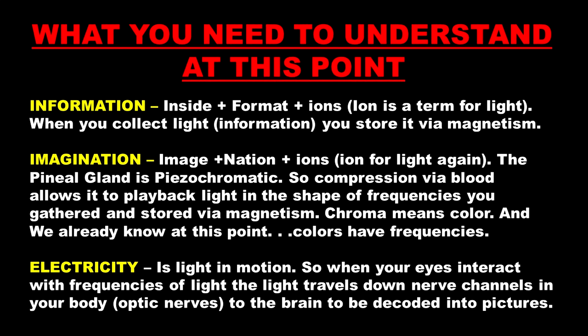Our imagination has the ability to take light inside of us and reproduce pictures based on information we've gathered. Compression via the blood allows it to play back light in the shape of frequencies gathered and stored via magnetism. Chroma means color, and colors have frequencies. Electricity is light in motion. When your eyes interact with frequencies of light, the light travels down the optic nerve to the brain to be decoded into pictures you're able to see — physically, or played back via the pineal gland internally.